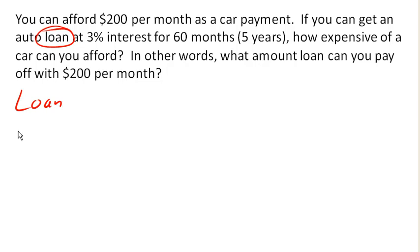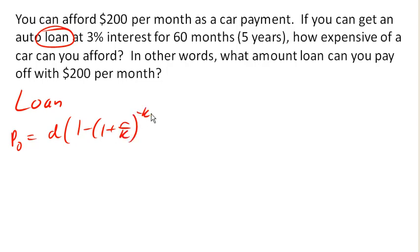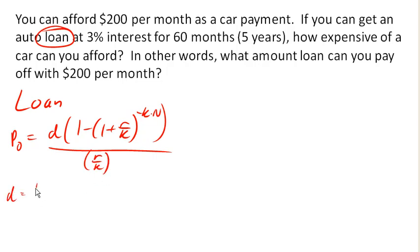So the equation is the same: P0 equals D times 1 minus (1 plus R over K) to the negative K times N, all over R over K. Where D is the loan payment each month, year, or whatever the frequency of the loan is.